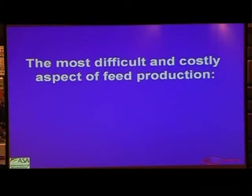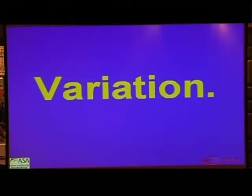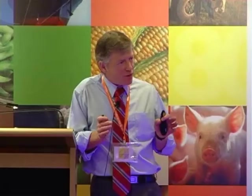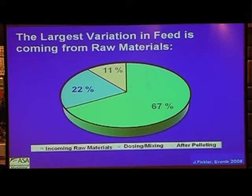This is all fine when you work with absolute values. The problem in the feed industry, however, is that we are working with variation. We buy ingredients truckload-wise, and we have to account for the variation which we purchase with each of these ingredients. The largest variation in feed is associated with raw materials — 67% of all the variation in nutrient quality is associated with the ingredients, 22% with dosing and mixing, and 11% with treatment after pelleting and cooling. It is therefore essential that we concentrate on the quality that these ingredients can bring.